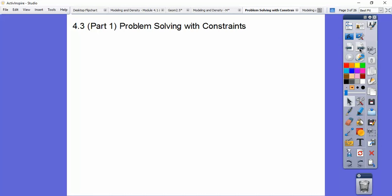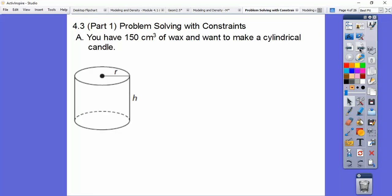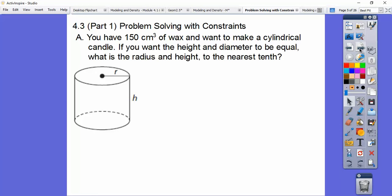So it's dealing with prior knowledge and we'll see. So here's one you guys. So we have 150 cubic centimeters of wax and we want to make a cylindrical candle. We want the height and the diameter to be equal. So what is the radius and the height? So careful of the wording here. This says diameter and then we're asked for the radius.